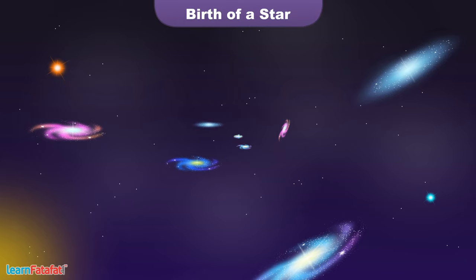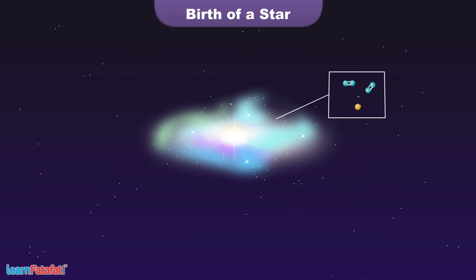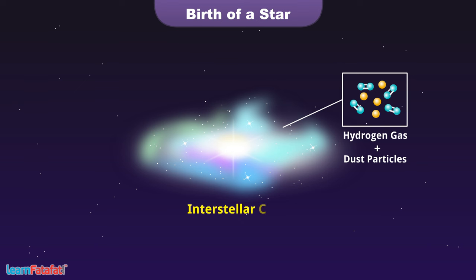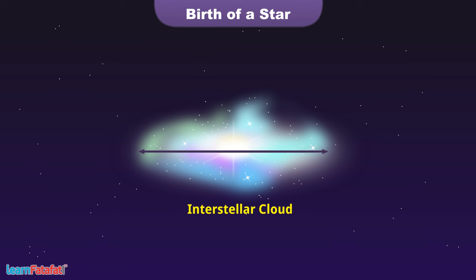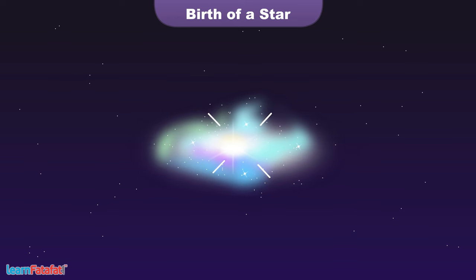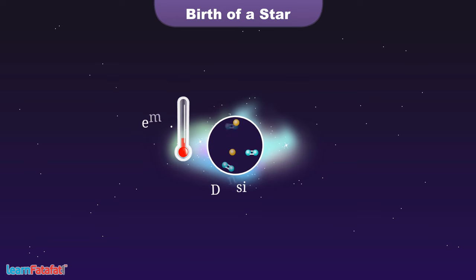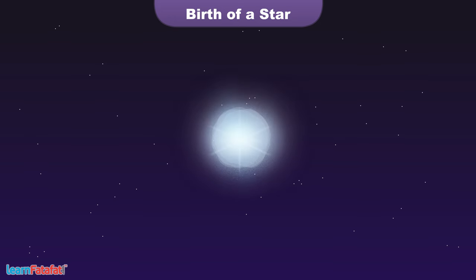Birth of a star: In the empty spaces between stars in a galaxy, there are huge clouds of gas and dust called interstellar clouds. The sizes of interstellar clouds are about a few light years, a light year being equal to 9.5 multiplied by 10 raised to the power 12 kilometers. Due to some events, the clouds get contracted, so the volume decreases and temperature and density increase, forming a dense hot sphere of gas.